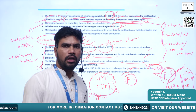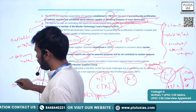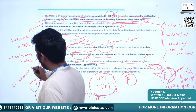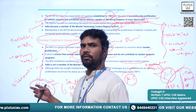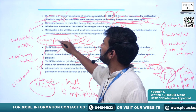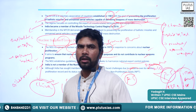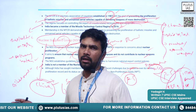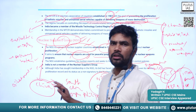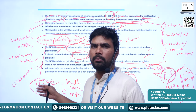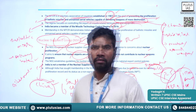India could not enter the Nuclear Suppliers Group because of China's opposition. So what India is trying to do is conclude bilateral agreements — in the next class, we will discuss nuclear energy and see how India overcomes this disability by concluding bilateral agreements for the supply of nuclear material. This is the important information from the examination perspective. That is it for today — thank you for joining the class. Have a good day.